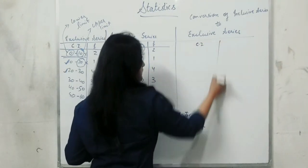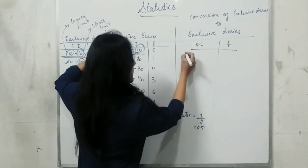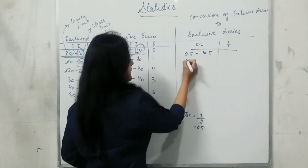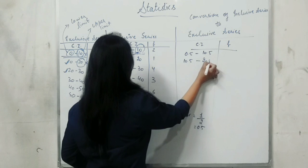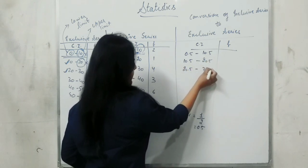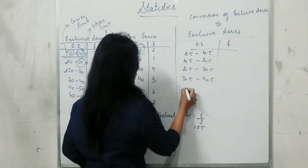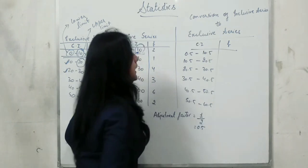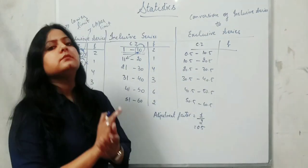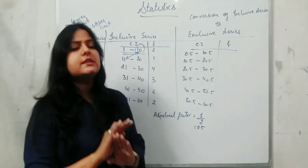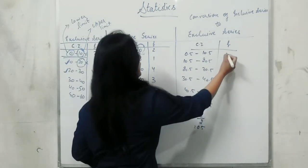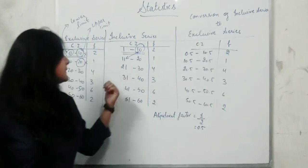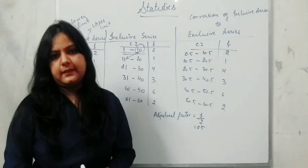So here you can see: from 1, subtract 0.5 to get 0.5; to 10, add 0.5 to get 10.5. Similarly: 10.5 to 20.5, 20.5 to 30.5, 30.5 to 40.5, 40.5 to 50.5, 50.5 to 60.5. Now the question is — will the frequency change? No. You have to write the same frequency as it is. So the frequency remains: 2, 1, 4, 3, 6, and 2. This is how we convert an inclusive series into an exclusive series.